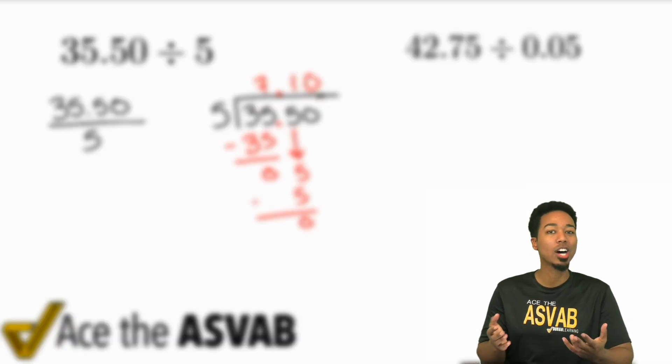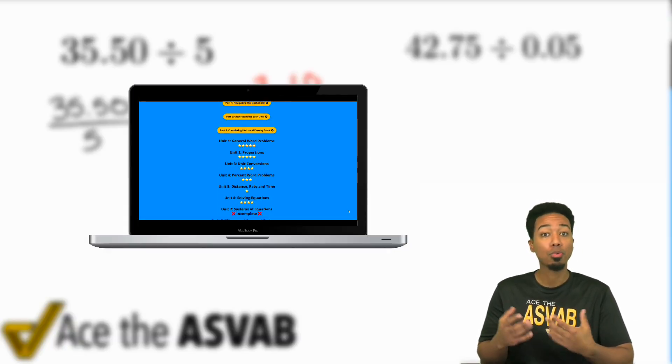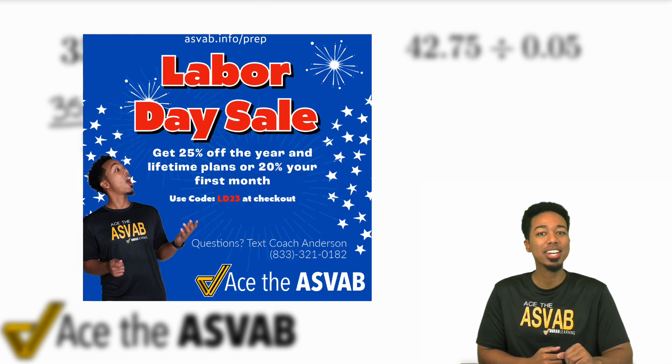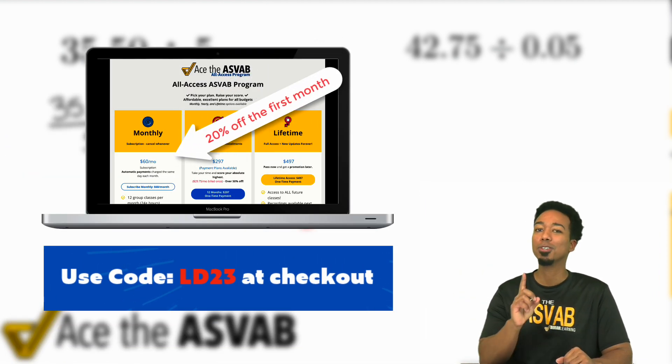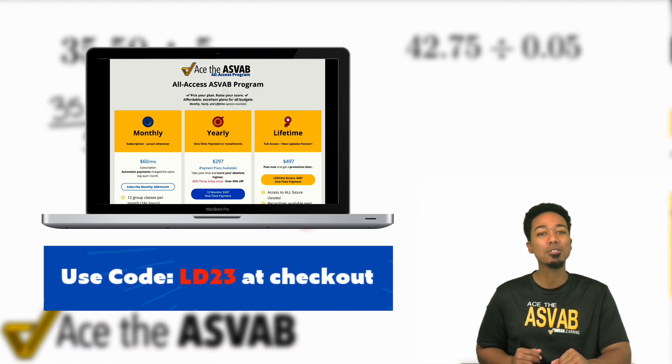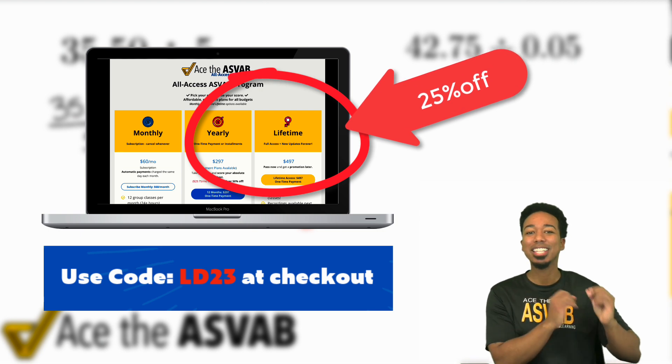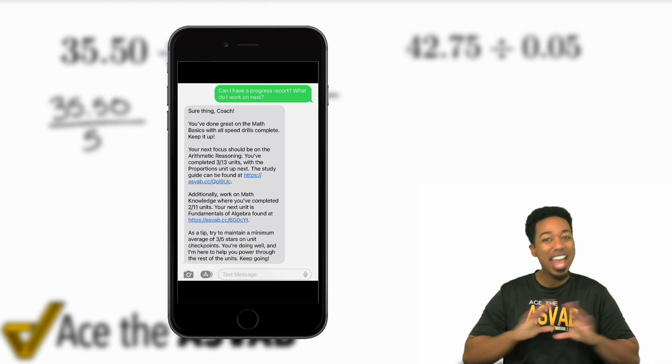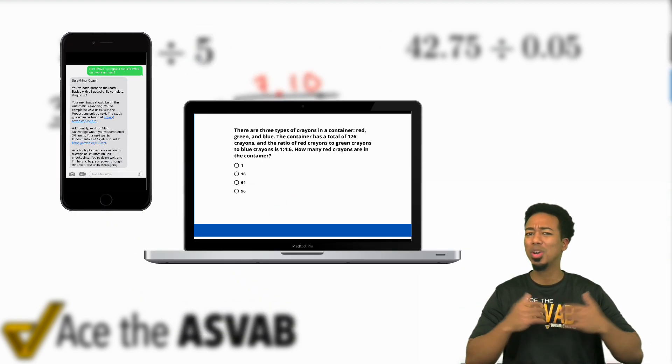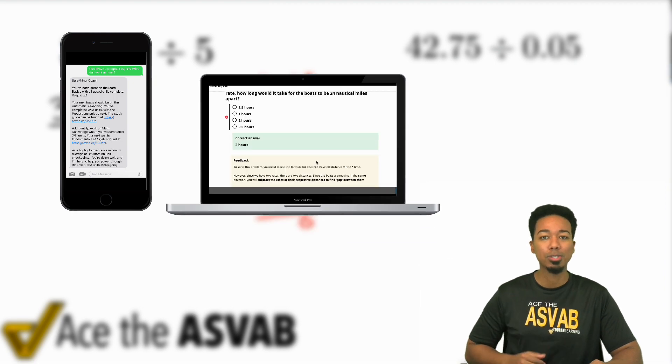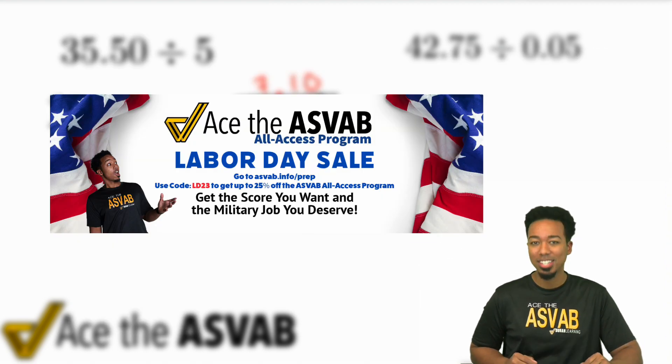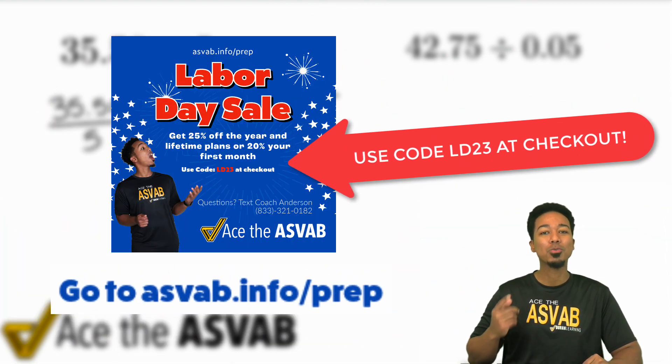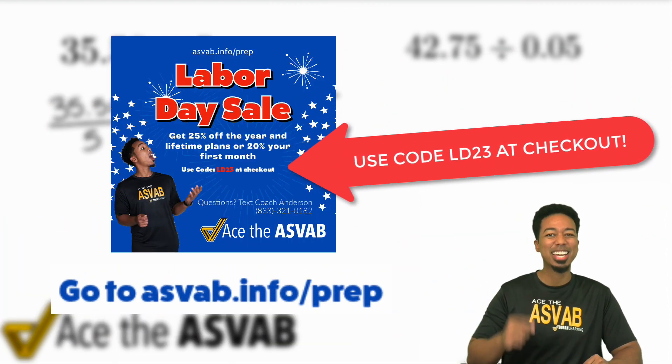Remember that raising your score and getting the job you want isn't luck. There's a process that you go through and practicing effectively with us is the best way to go about it. And this Labor Day, you can go ahead and use that code to save 20% off your first month or even better, save 25% off of our year and lifetime discounts. You'll get access to features like getting real time progress reports by texting us anytime 24/7, online courses with over 20,000 practice problems and step-by-step solutions. And that's just the tip of the iceberg. So if you want to ace the ASVAB, go ahead and go to that link in the description so that you can sign up, raise your score, save big and get that job that you want.